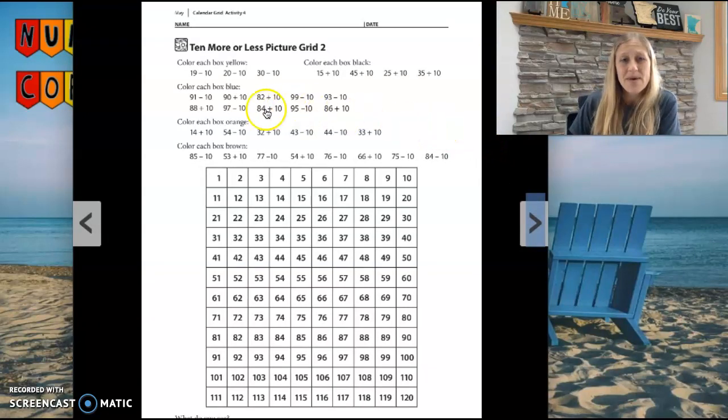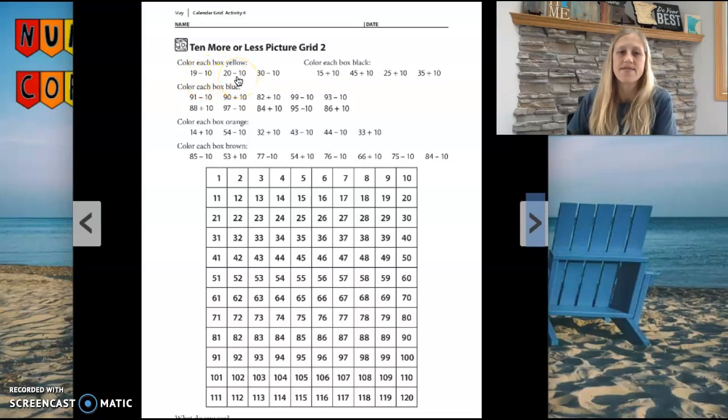What you're going to do is it says color each box with a color word. So color each box yellow. For 19 - 10, you'll find out the answer and then color the answer yellow. 20 - 10, color the answer yellow. 30 - 10, color the answer yellow.